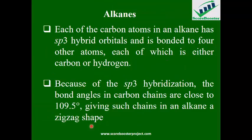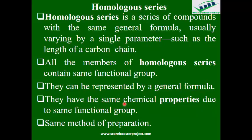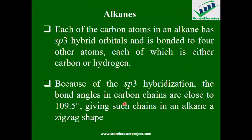Let's now talk about alkanes. Each compound in alkanes has SP3 hybrid orbitals — we have discussed hybridization before. Each hybrid orbital is bonded to four other atoms, each of which is either carbon or hydrogen. Because of this SP3 hybridization, the bond angles in carbon atoms are close to 109.5 degrees, giving carbon chains in an alkane a zigzag shape.